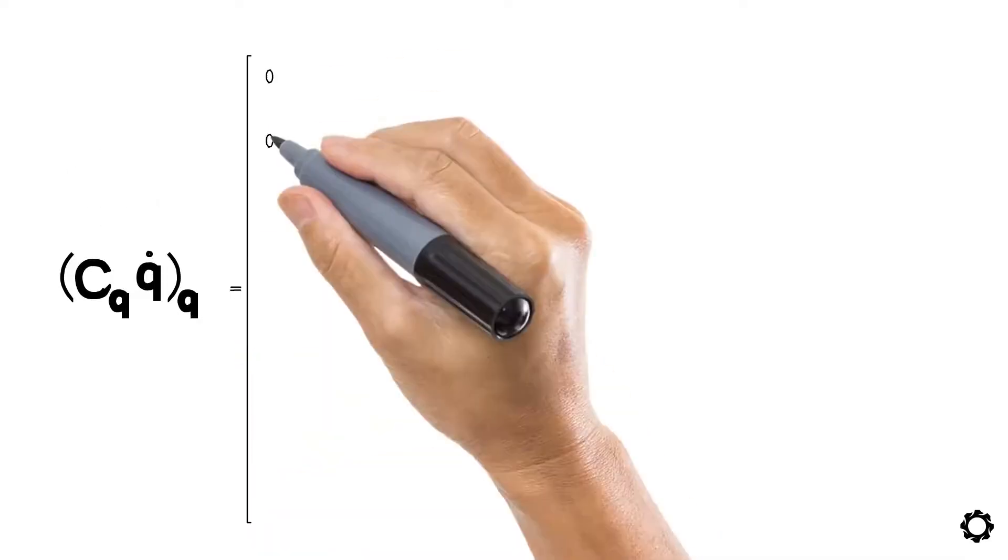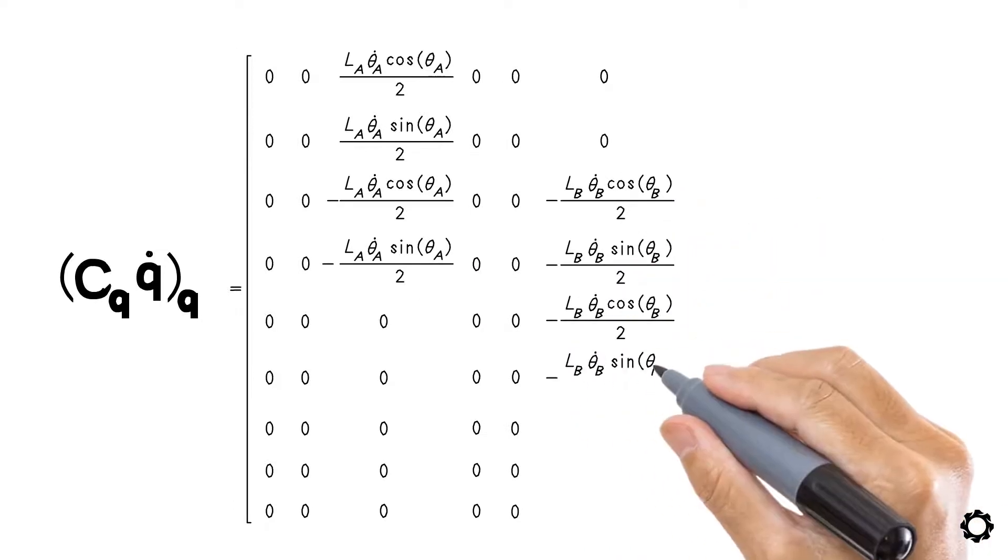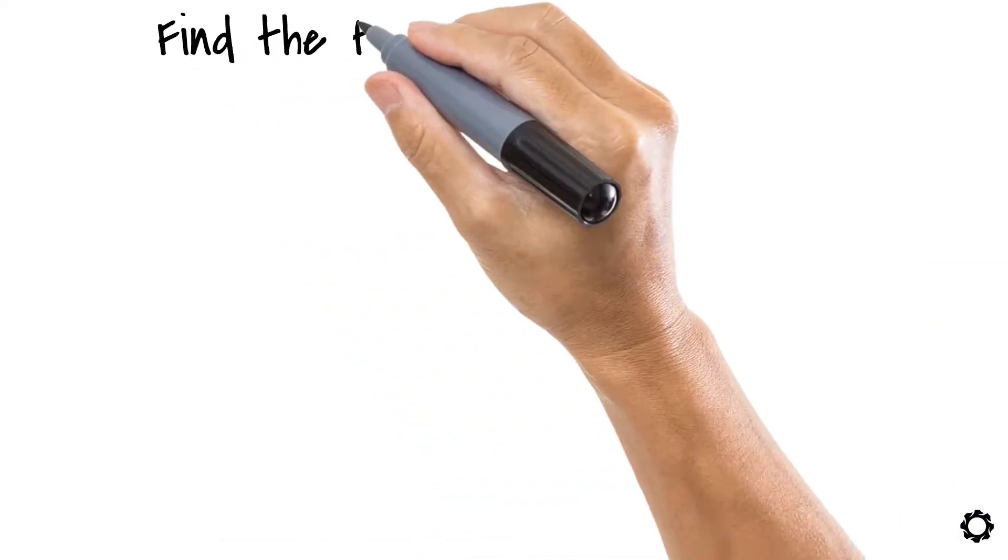Differentiating with respect to the generalized coordinates, we get another 9 by 9 matrix. Multiplying this matrix with the vector of generalized velocities, we finally find the term we were looking for.